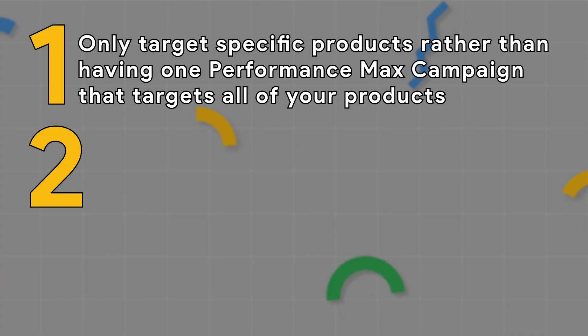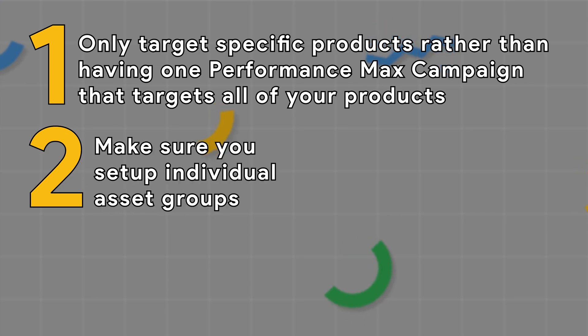Secondly, if you're going to use Performance Max, make sure you set up individual asset groups. It takes more time, but the benefit is that you can target specific headlines and descriptions in your ad copy, and use specific product images or marketing images for the particular products and services you're targeting. One thing you absolutely do not want to do is run a catch-all Performance Max campaign — I've never seen them perform well.